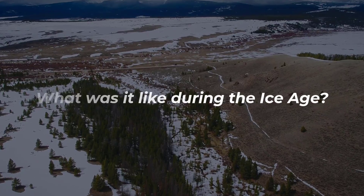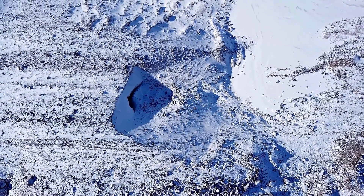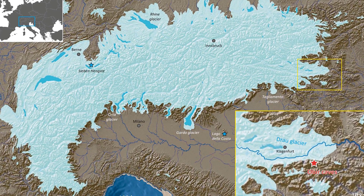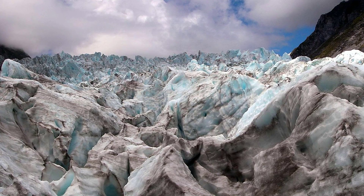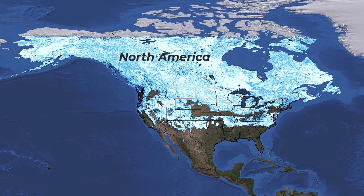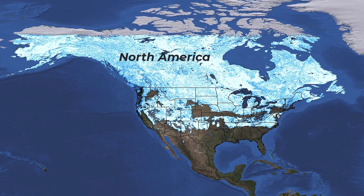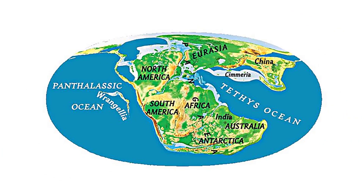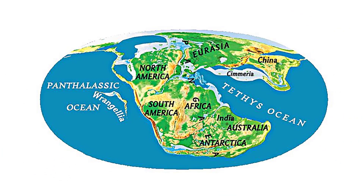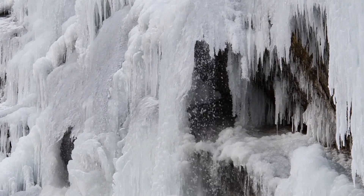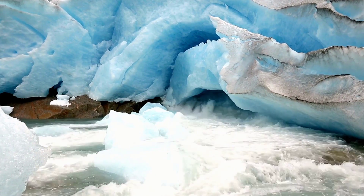When most people talk about the ice age, they usually mean the last glacial period, which began about 115,000 years ago and ended about 11,000 years ago with the start of the current interglacial period. The planet was much colder back then. When ice sheets covered most of North America, the average global temperature was around 46 degrees Fahrenheit or 8 degrees Celsius, resulting in ice sheets covering most of North America and Eurasia. Because most of the Earth's water was trapped in the ice sheets, the Earth was much drier and sea level was much lower.